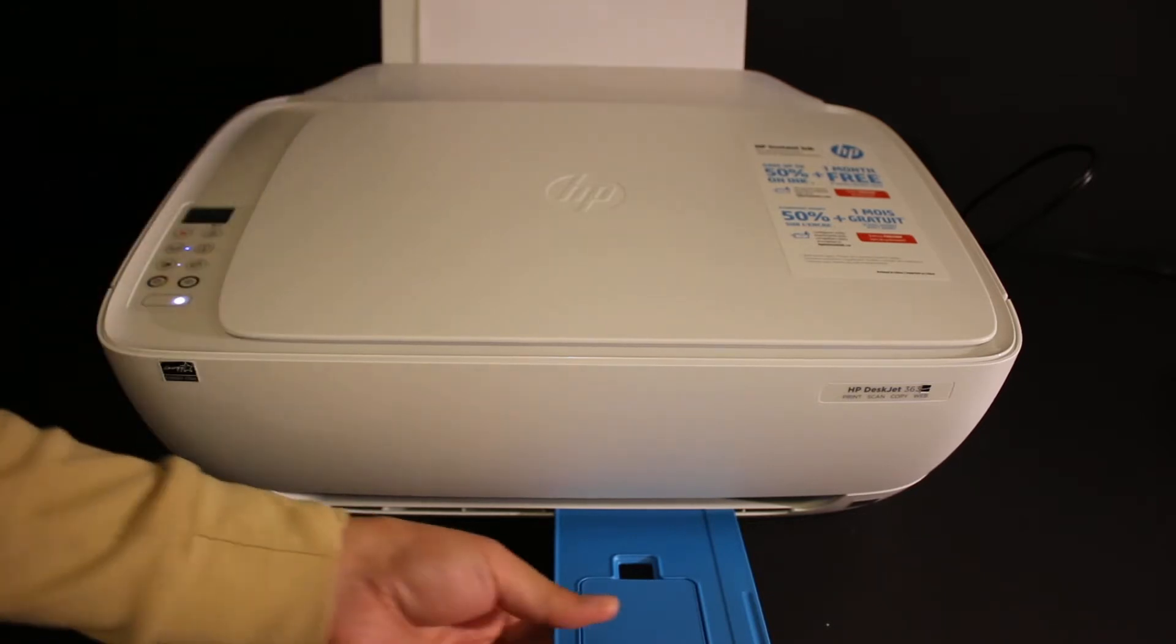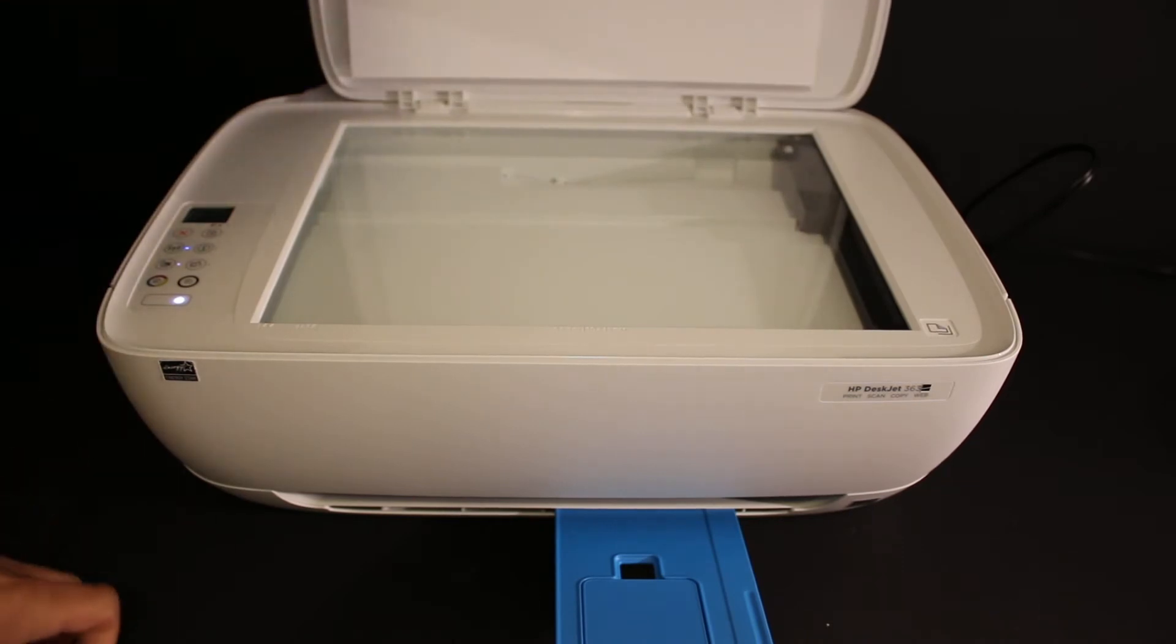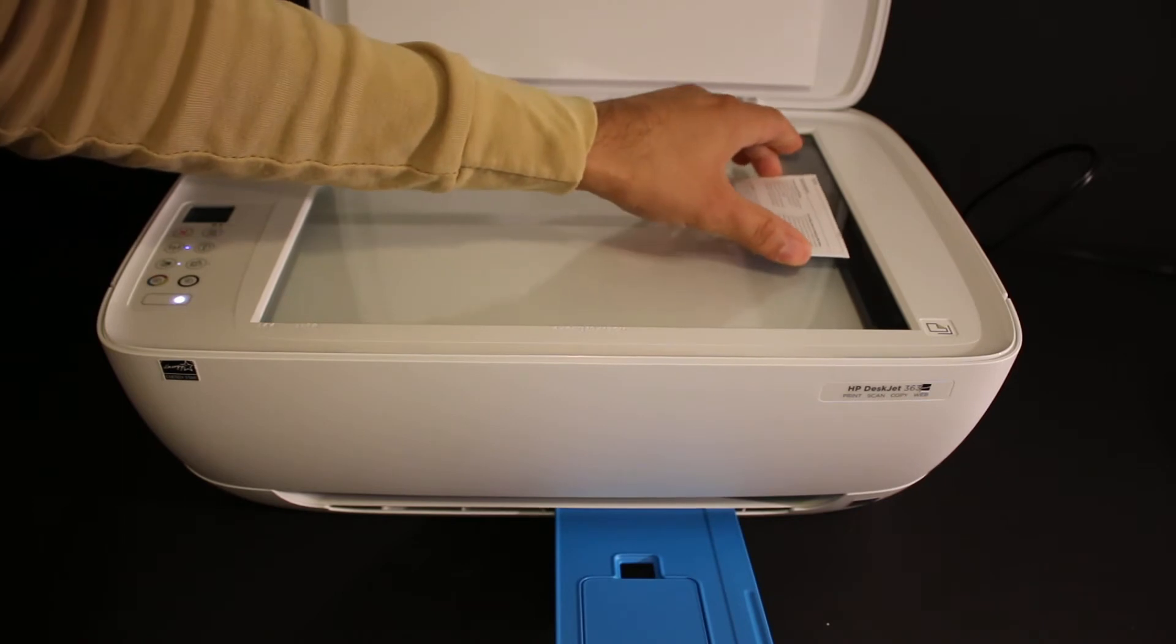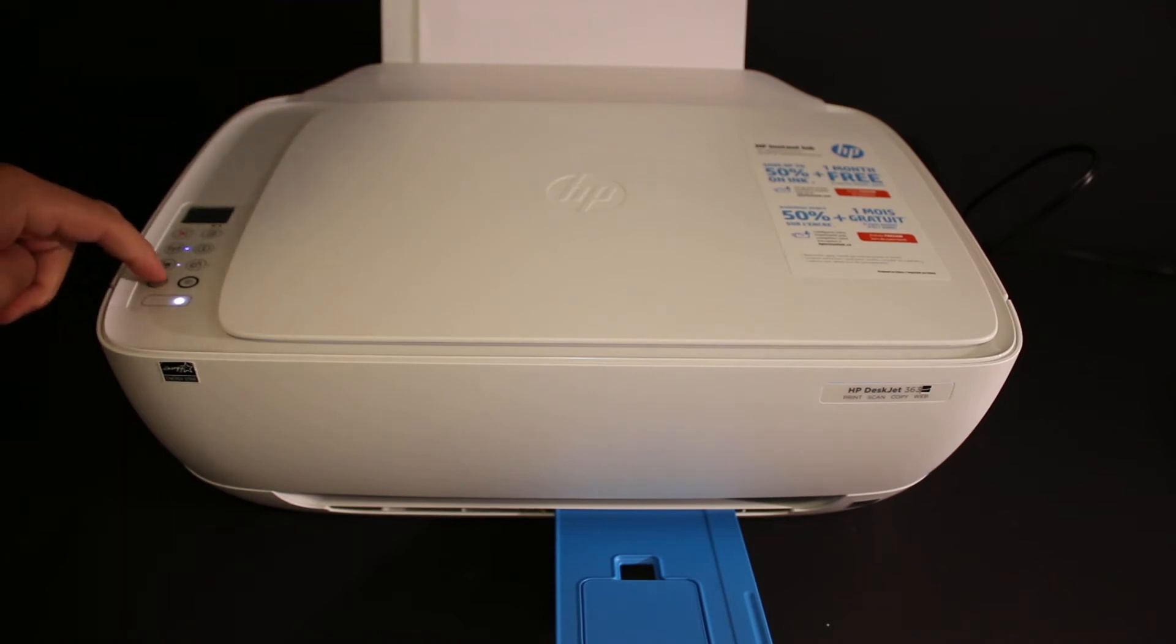Open the paper output tray. Open the top scanner lid and place the ID facing downwards, the front side, just at the middle of the screen. Click on the copy button. Click on the color copy as we are going to do that.